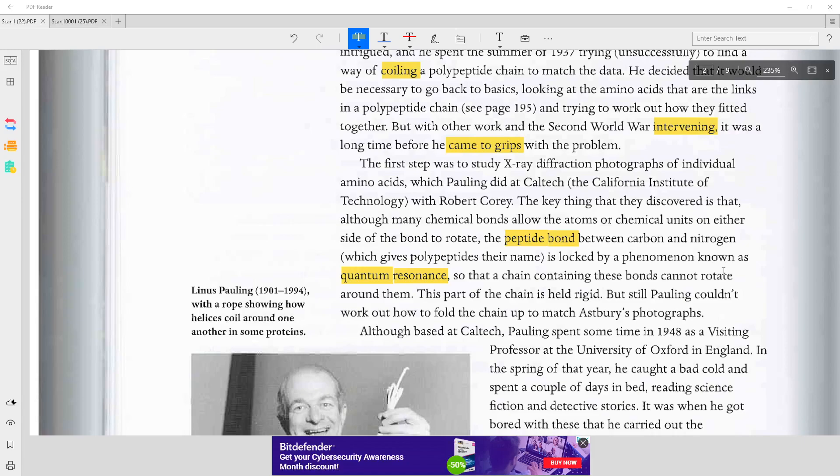This part of the chain is held rigid. But still, Pauling couldn't work out how to fold the chain up to match Asbury's photographs.